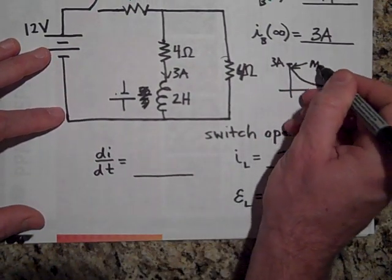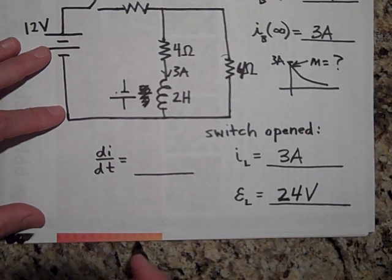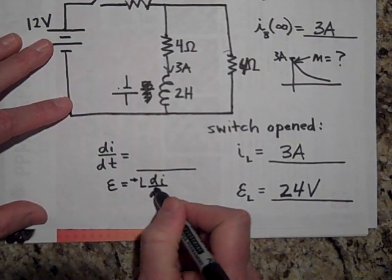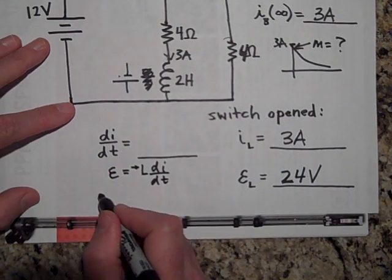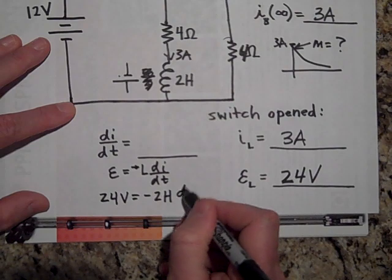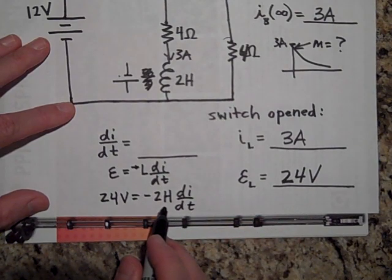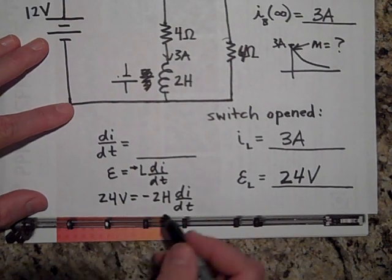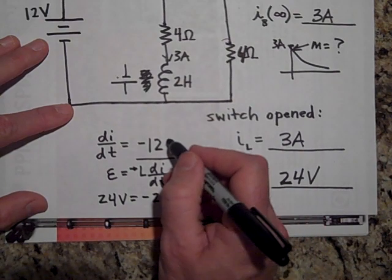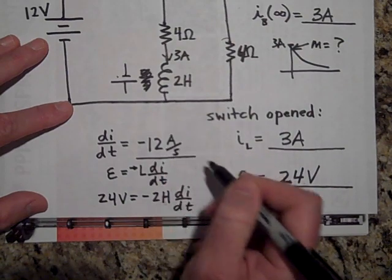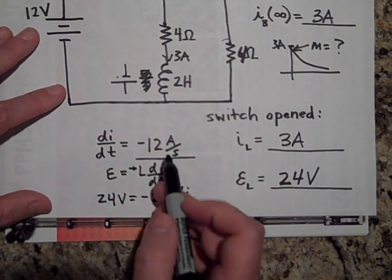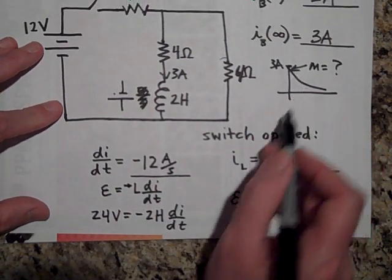To find DI/DT — the slope at t equals zero — I use the equation EMF equals negative L·DI/DT. With EMF equal to 24 volts and L equal to 2 Henrys: 24 equals negative 2 times DI/DT, which gives DI/DT equals negative 12 amps per second. The slope is negative because the current is decreasing. Volts over Henrys works out to amps per second.